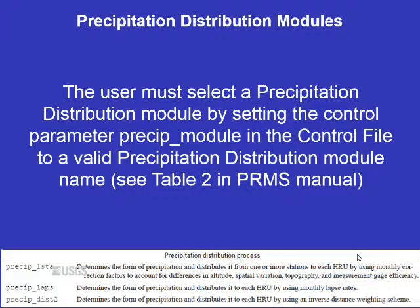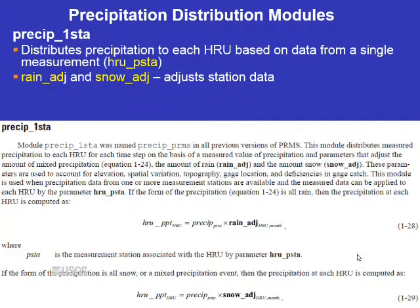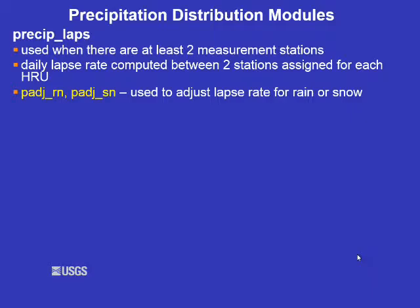In your control file, you need to set the control parameter precip_module to a valid precipitation distribution module name. The first precipitation distribution module of choice is precip_1sta. precip_1sta distributes precipitation to each HRU based on a measured value. You must designate one station for each HRU with the parameter HRU_psta. This uses measurements from a single station along with the associated rain_adjust and snow_adjust parameters to adjust that station's data. These adjustment parameters are by HRU and by month.